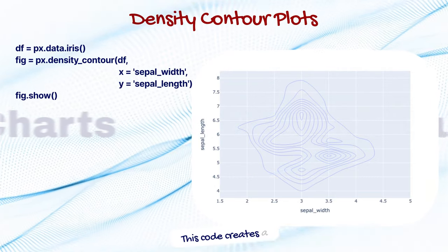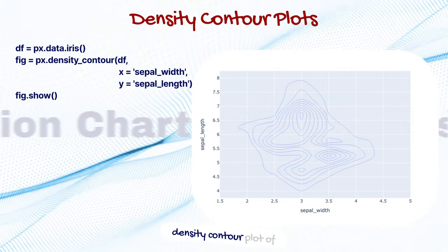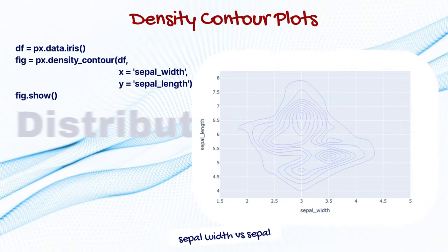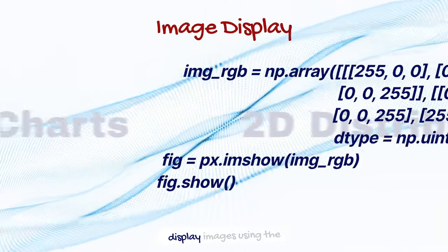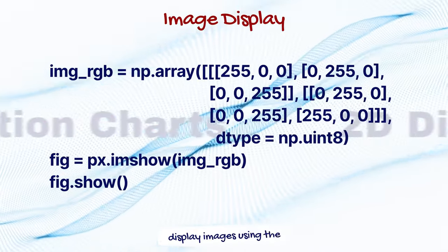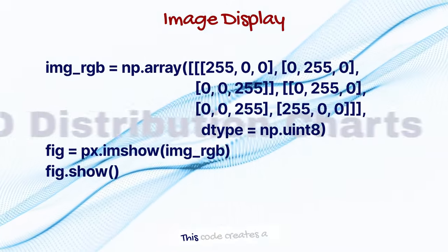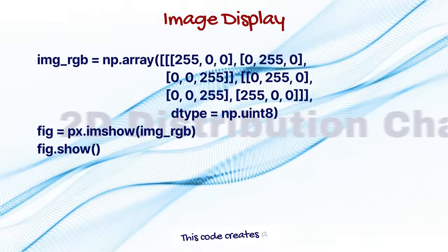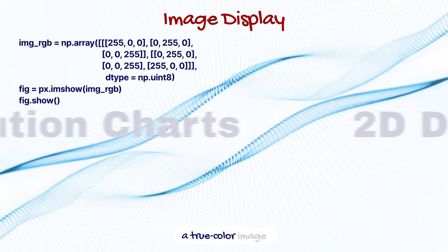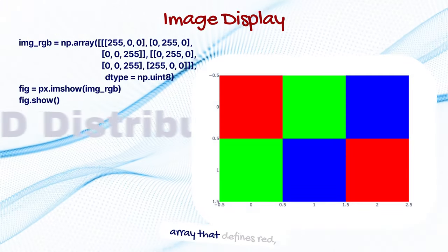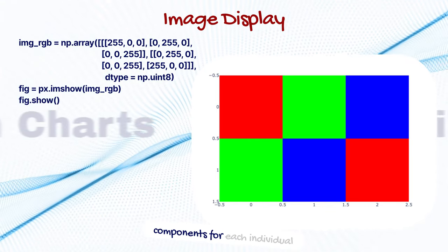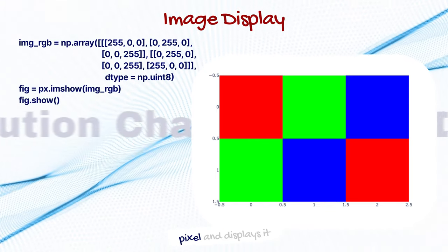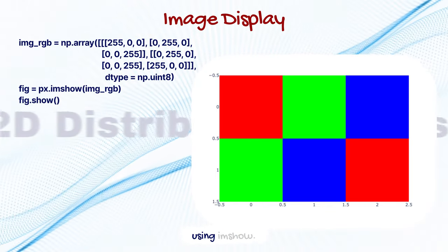This code creates a density contour plot of sepal width versus sepal length. Plotly Express can also display images using the imshow function. This code creates a simple RGB image — a true color image is stored as a data array that defines red, green, and blue color components for each individual pixel, and displays it using imshow.